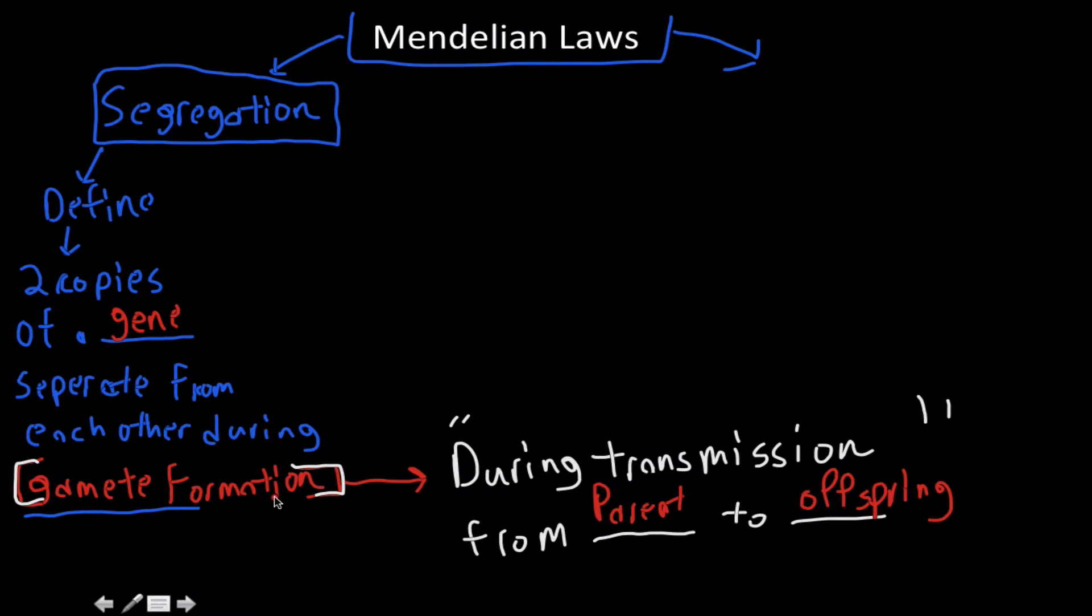All that he knew was that there was an observation that he could make. So the actual law states that two copies of a gene, which he gave as units of hereditary, separate from each other during transmission from parent to offspring.